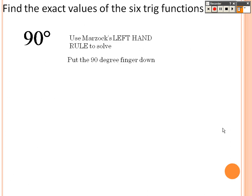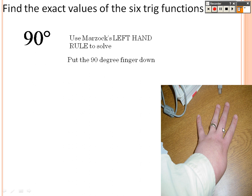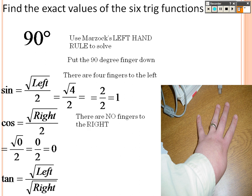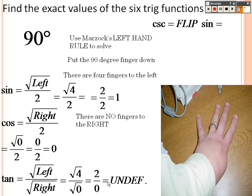For 90 degrees, using the finger rule: square root of the left over 2. There are four fingers to the left, so it's root 4 over 2, which is 1. For cosine there are no fingers to the right, so it's 0 over 2, which is 0. Tangent is root 4 over root 0, which is 2 over 0 — undefined.